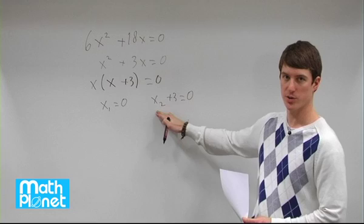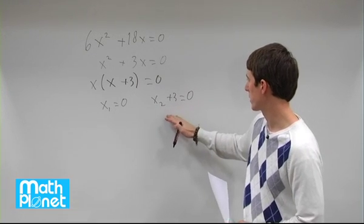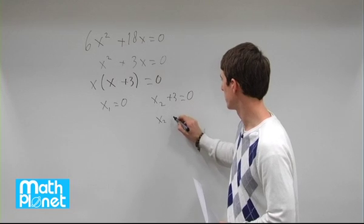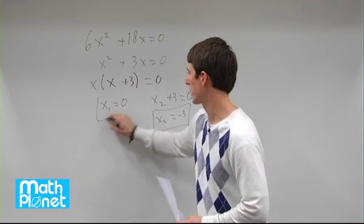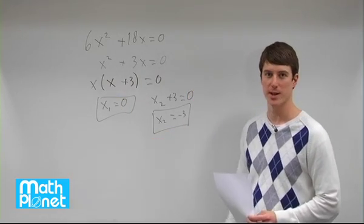Now we just need to solve it in the straightforward methods of algebra here. Subtract 3 from both sides, we get x2 equals negative 3. So we have two answers: x1 equals 0 and x2 equals negative 3.